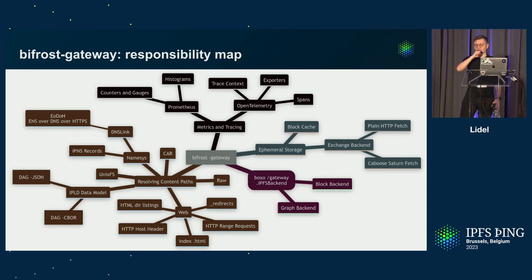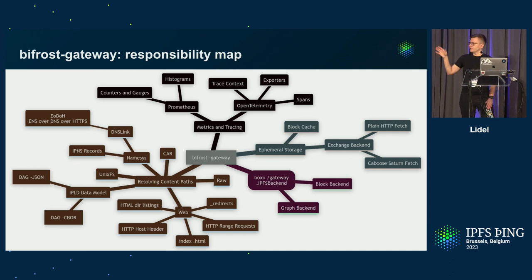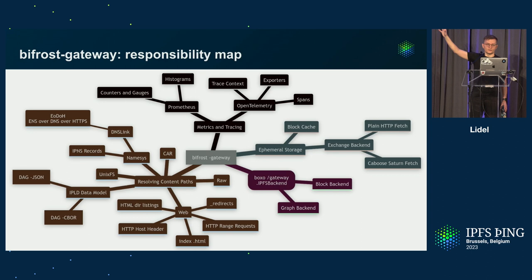There's no physical storage in Bifrost gateway — just an in-memory ephemeral cache. The exchange backend fetches blocks or batches of blocks either using a single HTTP request from a specific gateway, or in the case of Saturn, using Caboose — which the next talk covers. Caboose is used for the graph backend experimentation in Project Saturn. By default, the settings use block backend with plain HTTP fetch. A lot of work also went into adding instrumentation around metrics and telemetry.